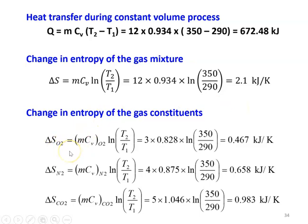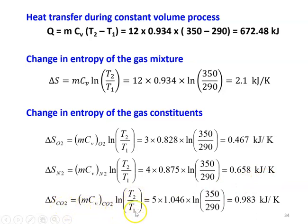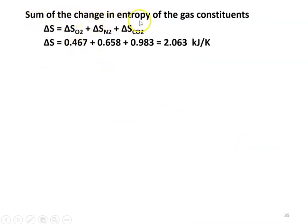Now the entropy change for each gas constituent: ΔS_O2 = m·CV_O2·ln(T2/T1) = 3 × 0.828 × ln(350/290) = 0.467 kJ/K. ΔS_N2 = 4 × 0.875 × ln(350/290) = 0.658 kJ/K. ΔS_CO2 = 5 × 1.046 × ln(350/290) = 0.993 kJ/K. Sum = 0.467 + 0.658 + 0.993 = 2.063 kJ/K.